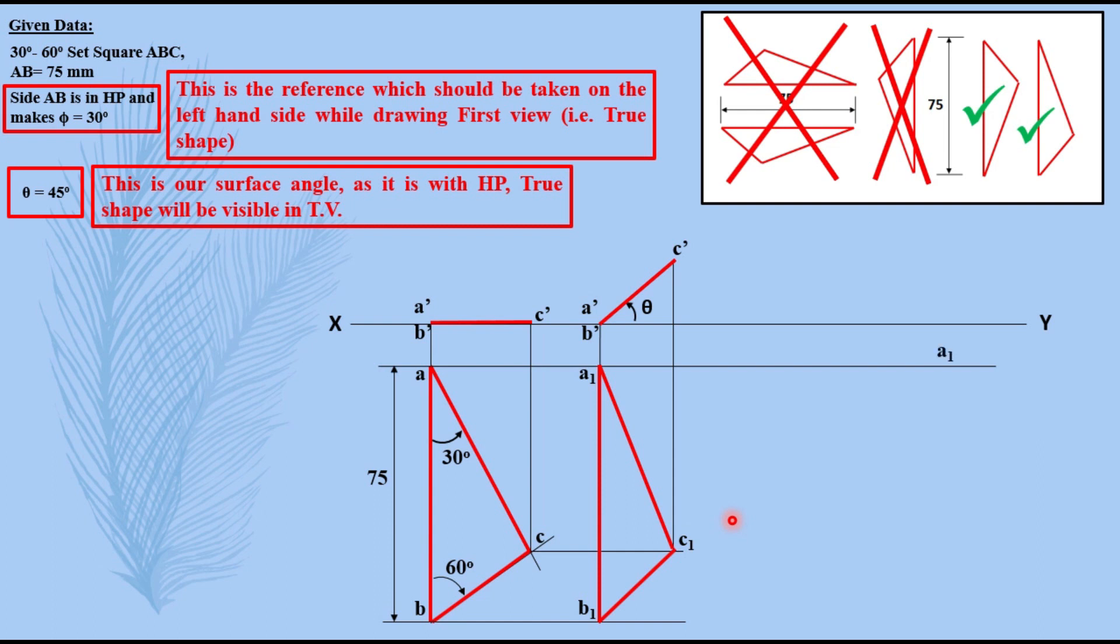Taking the point A1, given angle phi which in our case is 30 degrees, drawing the line. Then taking compass, distance A1 B1 as radius, keep your compass at this A1 now and cut an arc. Name this point as B1, make it dark.